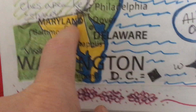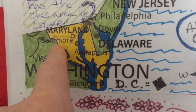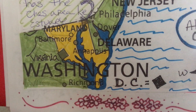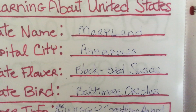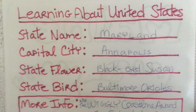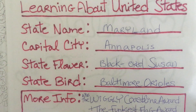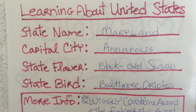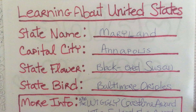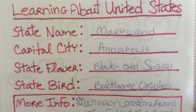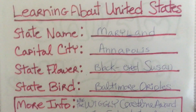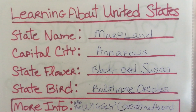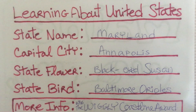So that's Maryland. I'll give you a couple of fun facts. Maryland is the state name, capital city Annapolis, State Flower Black Eyed Susan, State Bird Baltimore Oriole.